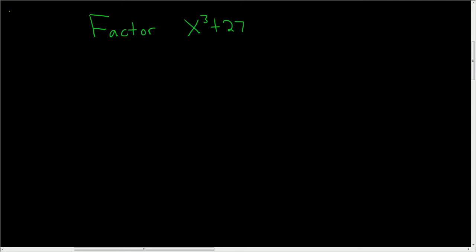Factor x cubed plus 27. Solution: The first thing you want to do is rewrite this as the sum of cubes. So you can write this as x cubed plus 3 cubed.